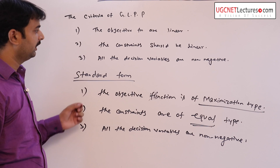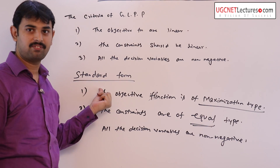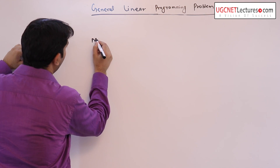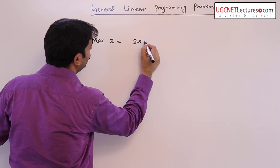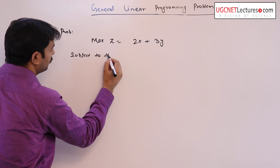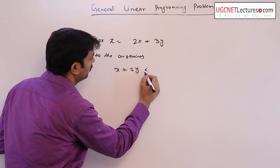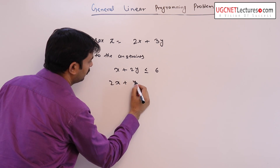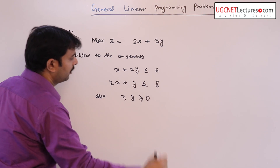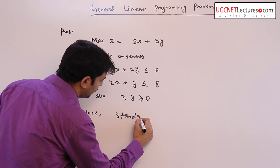Now I will discuss how a general linear programming problem reduces to its standard form. Consider the problem: maximize z equal to 3y, subject to constraints, where x and y are non-negative. The problem is to reduce this problem into its standard form.